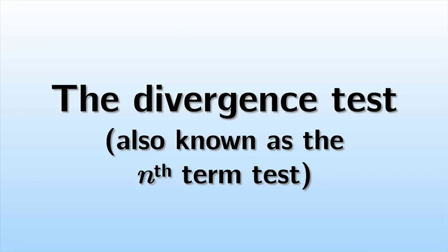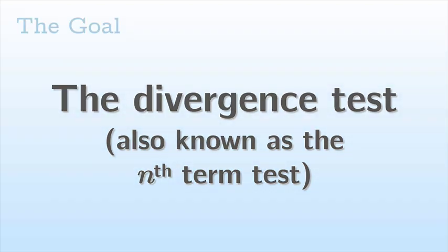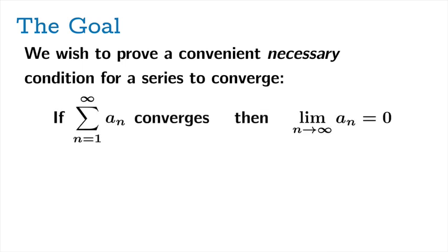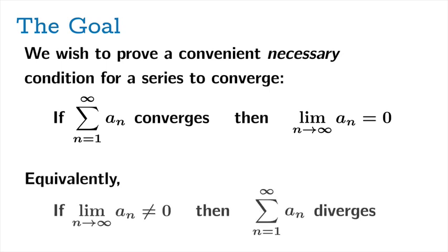Hey everybody! We're going to talk about the divergence test, also known as the nth term test. We wish to prove a convenient, necessary condition for a series to converge: if a series converges, then its sequence of terms goes to zero. Another way to put this is, if the sequence of terms fails to go to zero, then the series diverges.